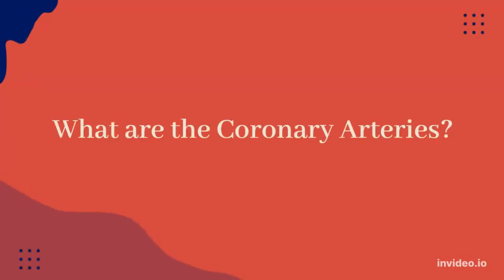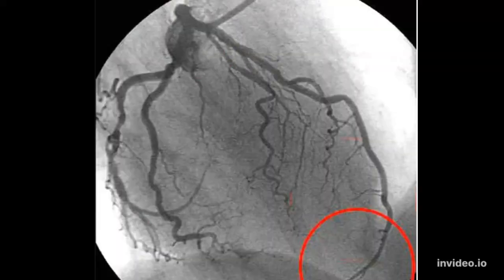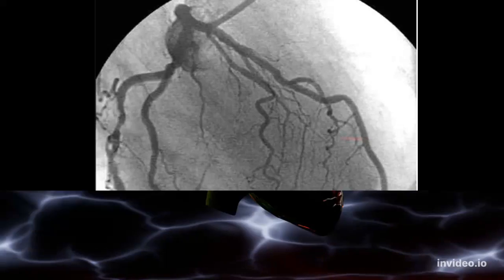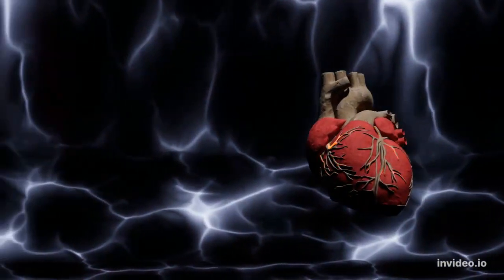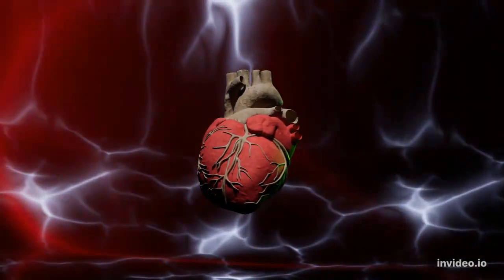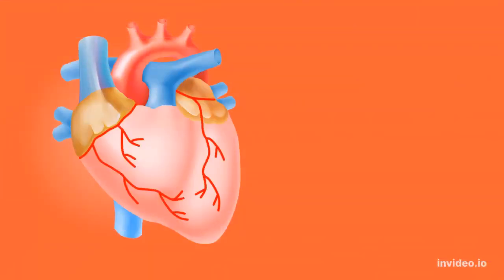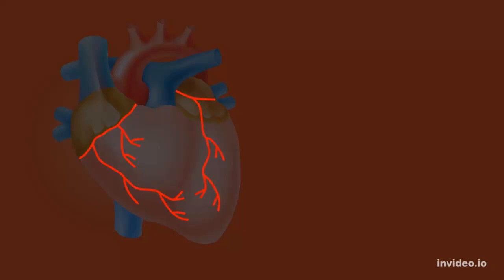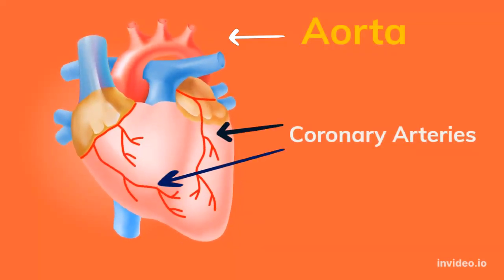The coronary arteries are major blood vessels in your body. They supply blood to the heart muscles, providing the oxygen and nutrients needed to pump blood through your body. The coronary arteries wrap around the outside of the heart. The right and left coronary arteries supply blood to your heart and are the first branches of the aorta, which is the main artery in your body.